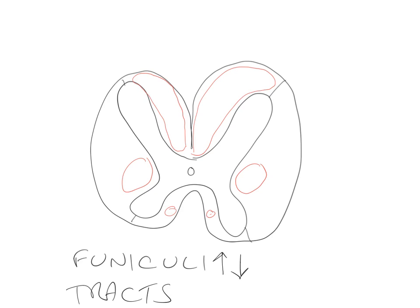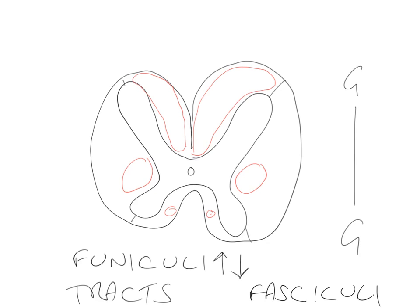What is a tract? A tract is relatively simple to understand - it is simply a connection between two areas of grey matter. Typically, a tract sends information in only one direction, and all the fibres within a tract have a similar function. So a sensory tract might send information upwards, whereas a motor tract might send information downwards between two areas of grey matter. Within a tract, we can actually identify subdivisions, and these subdivisions we term fasciculi (singular fasciculus).